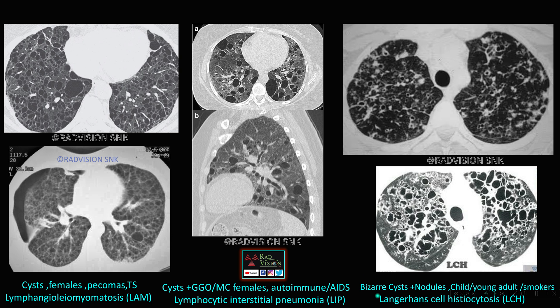Another similar picture shows multiple cysts of varying sizes which are bizarre-shaped, predominantly in the upper lobes, in a child or young adult smoker. Here you can see multiple intervening nodules, and sometimes these nodules cavitate forming cysts; honeycombing appearance can also be seen. This is Langerhans cell histiocytosis (LCH). To summarize: simple multiple cysts with pneumothorax in a female — LAM; multiple cysts with intervening GGOs in a female — LIP; multiple cysts with cavitating nodules in a young smoker or child — LCH.